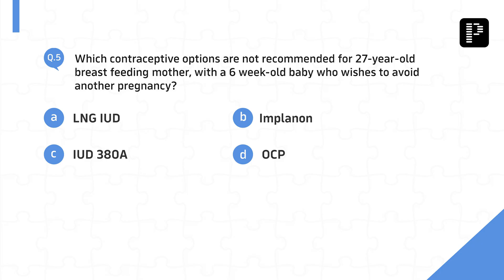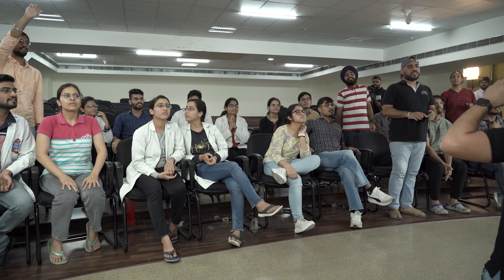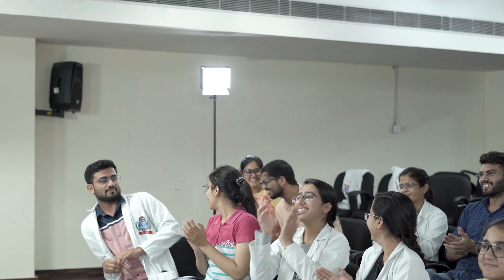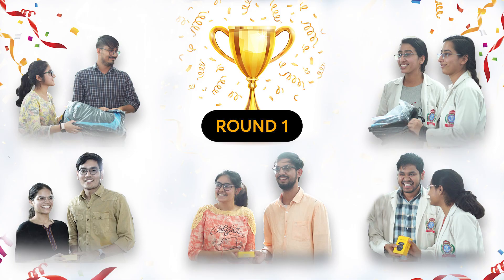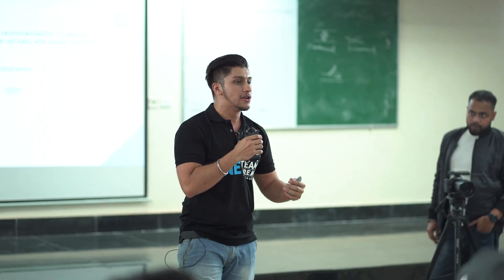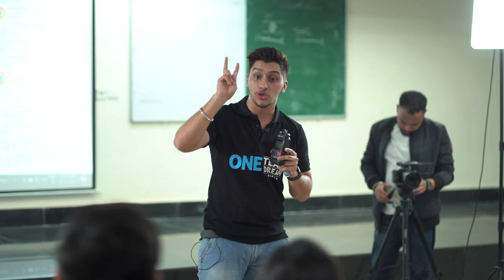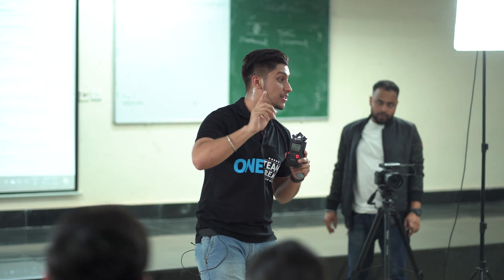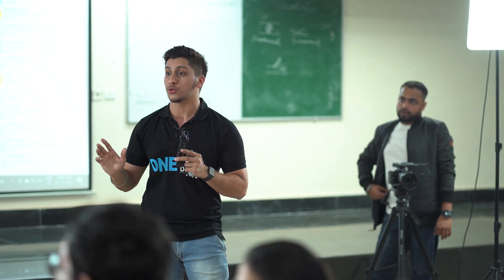Which contraceptive option is not recommended for a 27-year-old breastfeeding mother with a six-week-old baby who wishes to avoid another pregnancy? Clap, everyone! We have our last finalists. Which are our five finalist groups — please come ahead. Amongst the five, whoever answers two correct will be qualified for the final round. The cash prize for number one is a 10,000 rupees Amazon voucher!